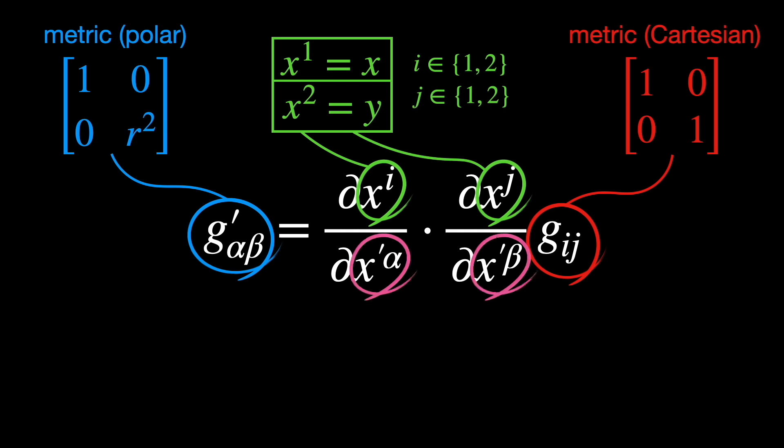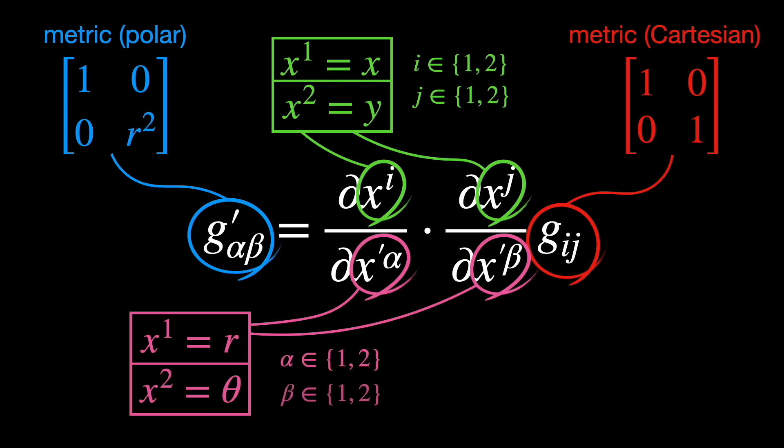x'α and x'β are the new coordinates r and theta, for alpha and beta 1 or 2. The expectation is that, after using the tensor transformation formula for the original metric in Cartesian coordinates, we get, as an output, the actual matrix in polar coordinates.